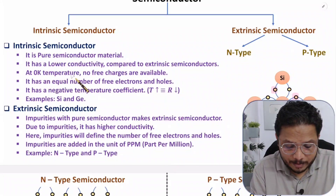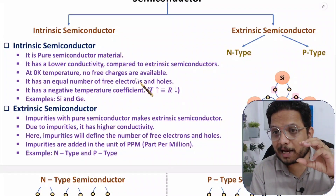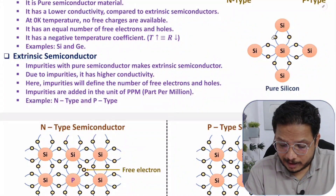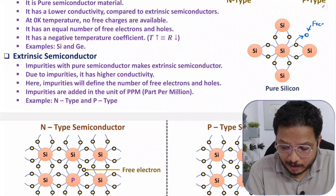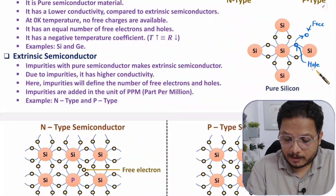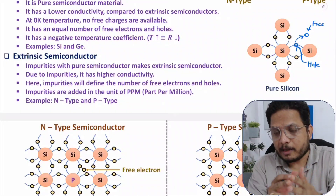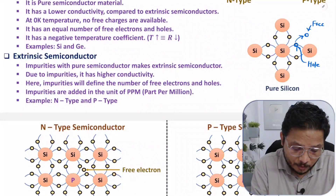At zero Kelvin temperature there are no free charge carriers, so conductivity will be less. But as you increase the temperature, there is a possibility that electron-hole pairs will get generated. If an electron breaks out of a covalent bond and becomes free, a hole is generated at that location. So as you increase the temperature, covalent bonds can break, generating a free electron and a hole — this is called electron-hole pair generation.